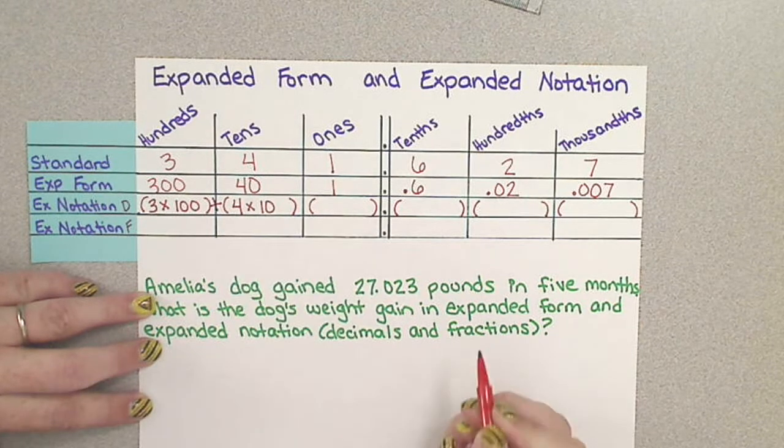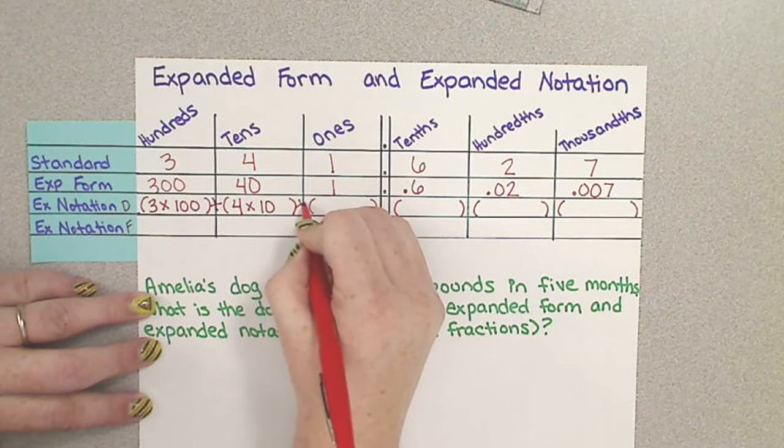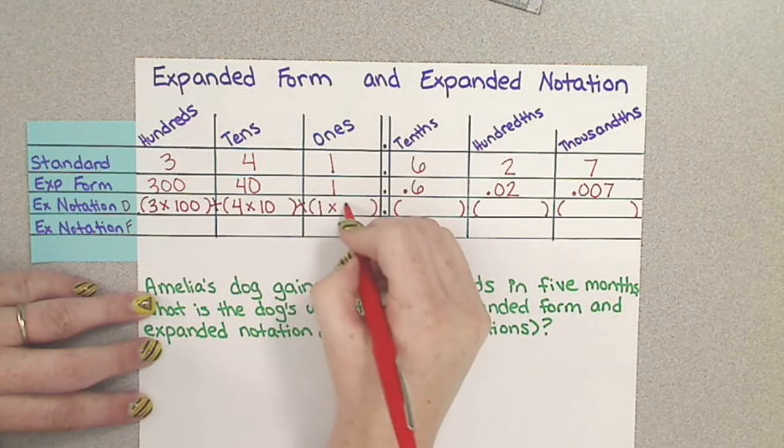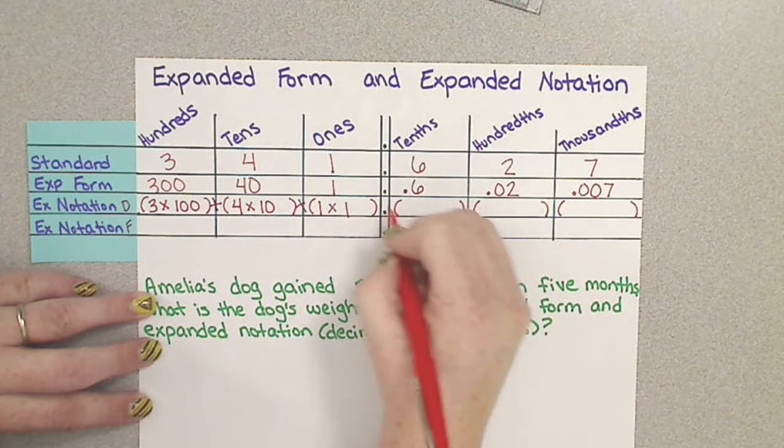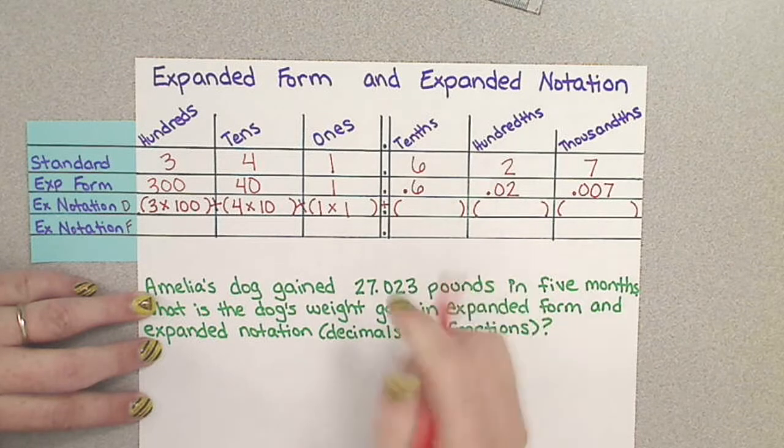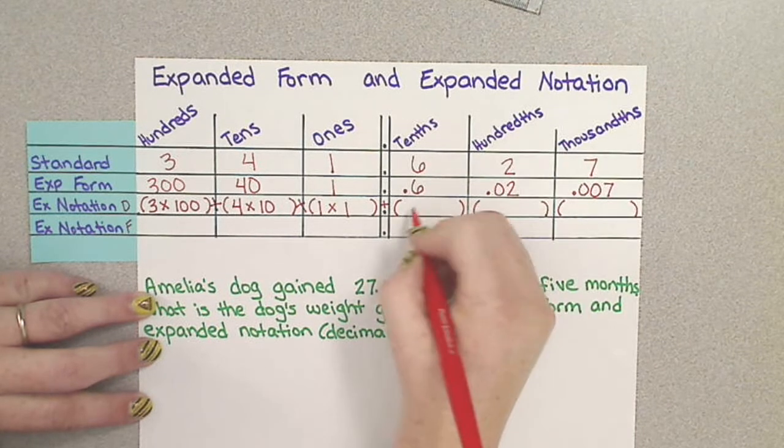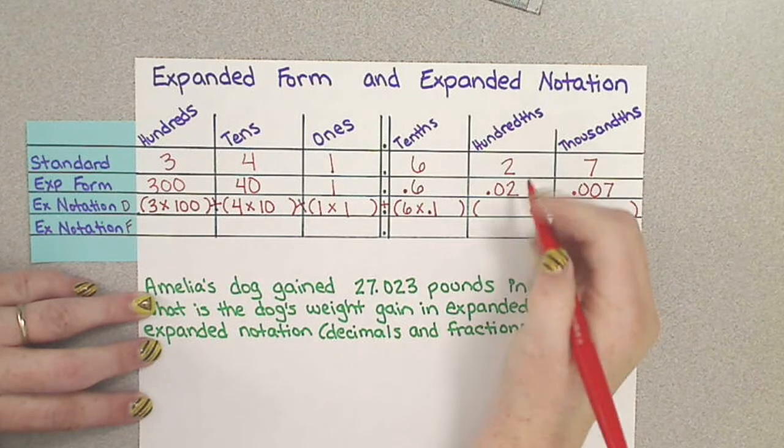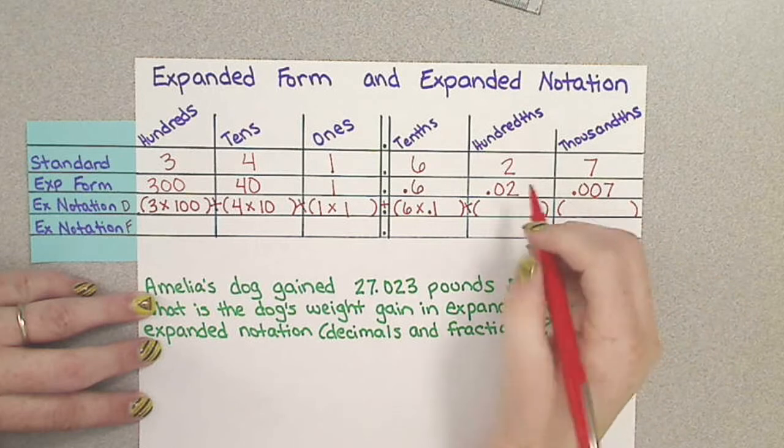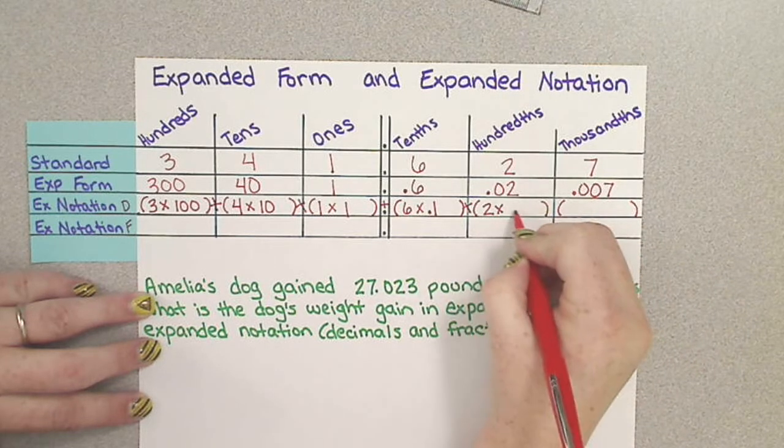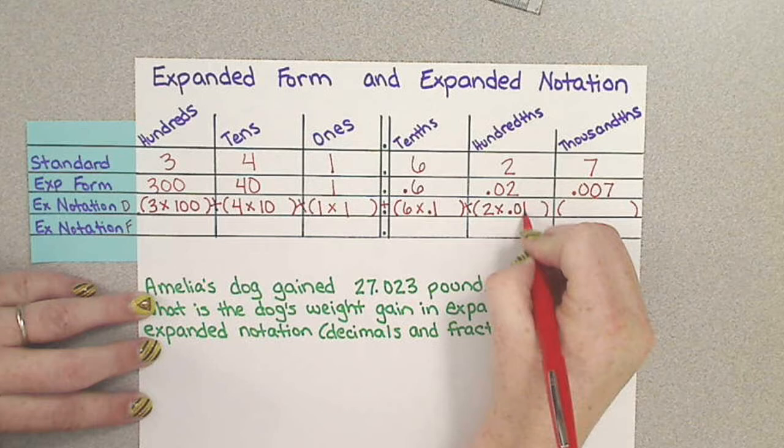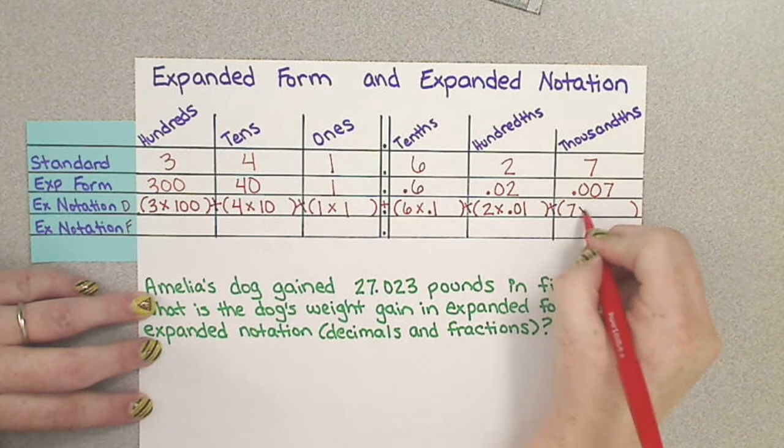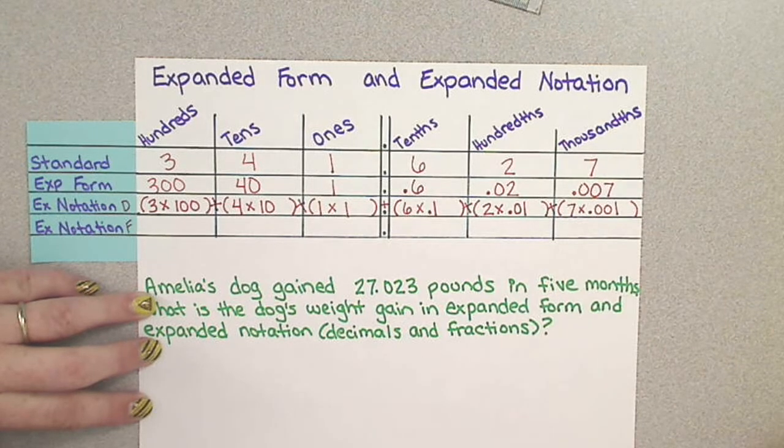Add that to 1 times 1, added to 6 times 1 tenth, added to 2 times 1 hundredth, added to 7 times 1 thousandth.